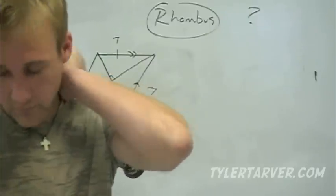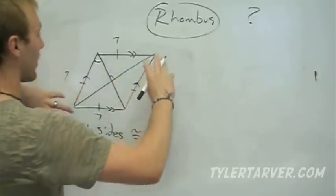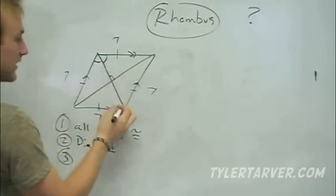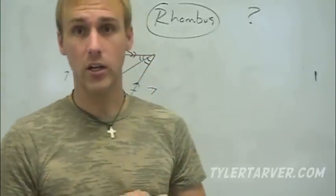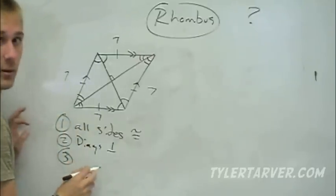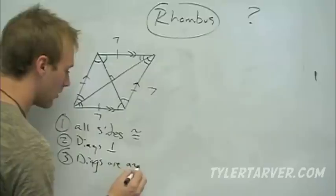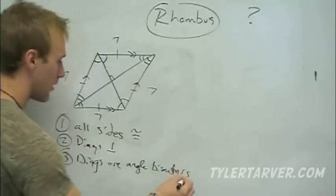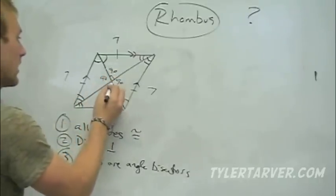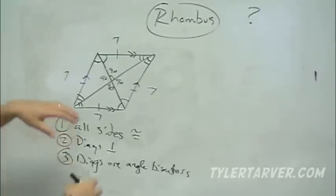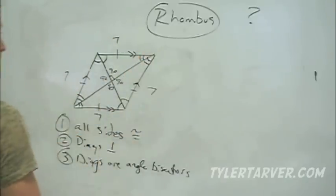Last thing: in a rhombus, the diagonals are angle bisectors. Since it's a parallelogram, we already know these two angles are congruent and these two angles are congruent. So if those are angle bisected, these are too. Since the angles are already congruent, we really only have two different angle measures around the outside, plus the 90-degree angles in the middle. Whatever one of these triangle angles is, all four of those are the same. Whatever one of these is, all four of those are the same. So: all sides congruent, diagonals perpendicular, and diagonals are angle bisectors.